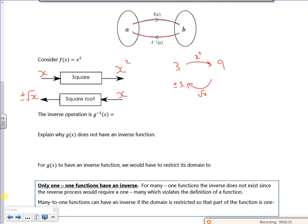The inverse operation is plus or minus root x. So why does g of x not have an inverse function? Because you're not sure where it's going back to. It can go back to plus 3 or minus 3. And what we need is it to go back to just the plus 3.